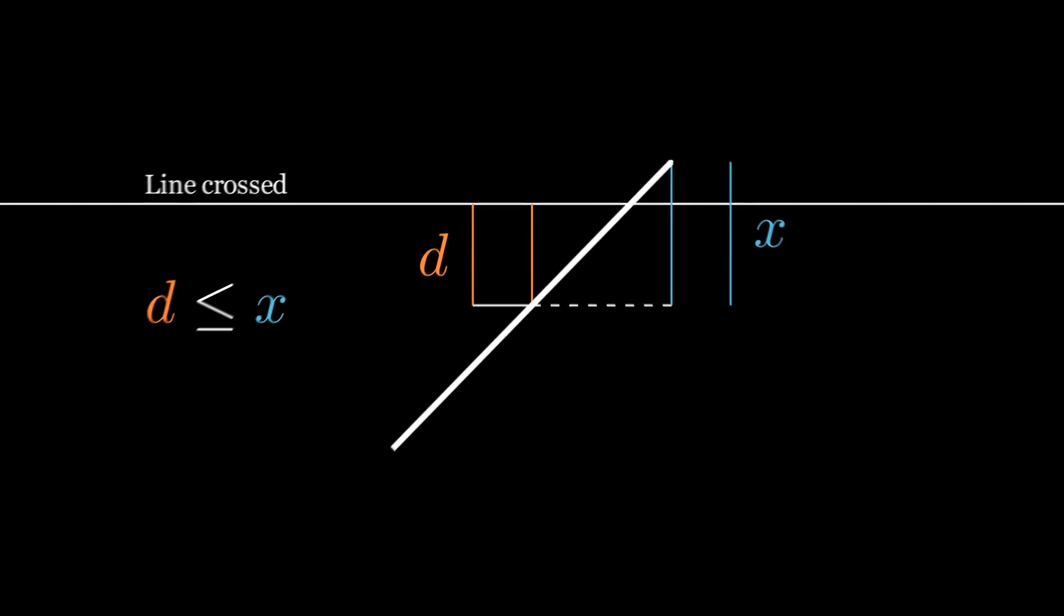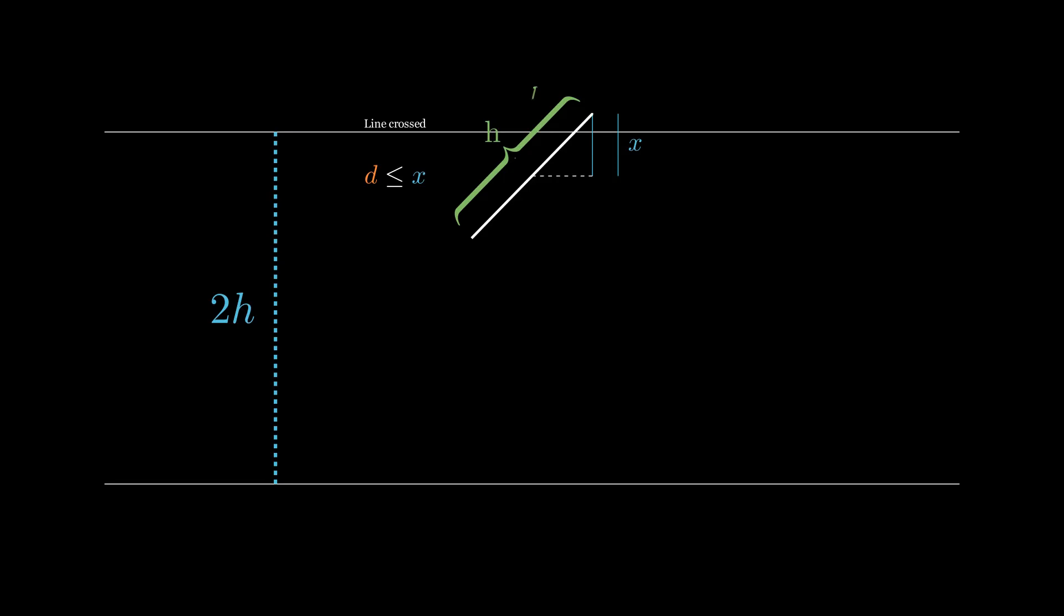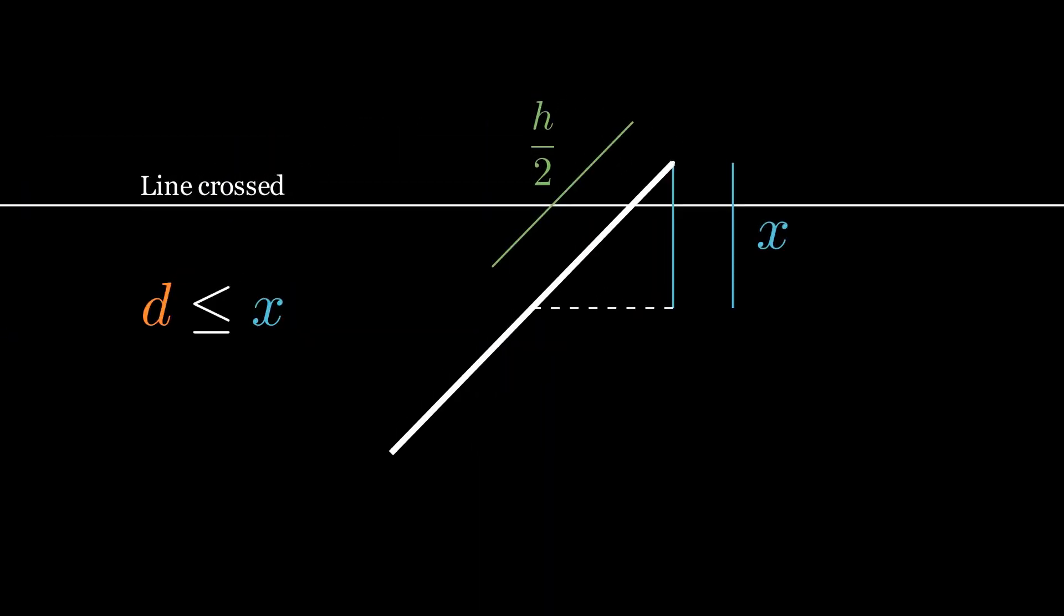Remember, the length of the needle is h, so the length of this hypotenuse is h over 2. By using trigonometry, x is equal to h over 2 sin theta. And this means the needle crosses the line when d is less than or equal to h over 2 sin theta.